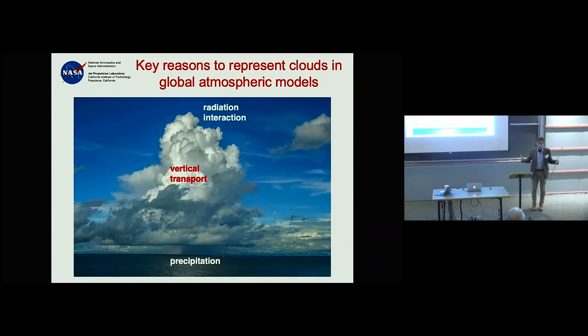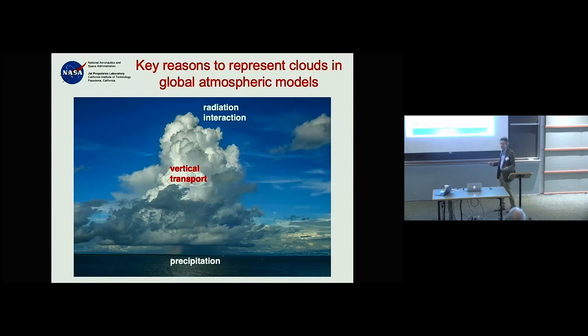They need clouds because of precipitation — that's the number one thing people want to know: is it going to rain tomorrow. We also know that vertical transport is strongly influenced by buoyancy, and buoyancy is related to phase transitions.